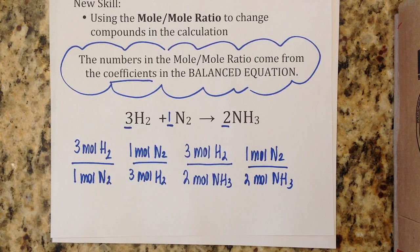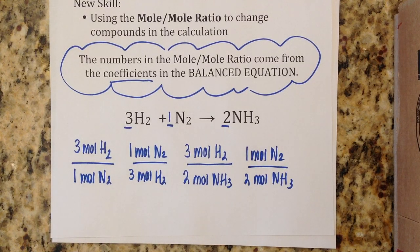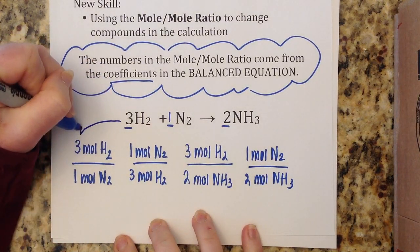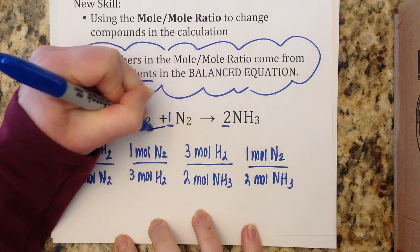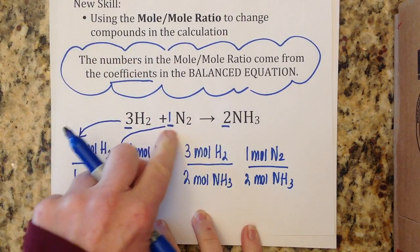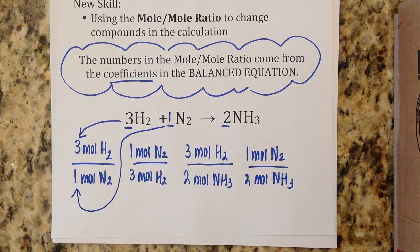Maybe I want to compare nitrogen and ammonia: one mole of nitrogen gas to every two moles of ammonia. A mole-to-mole ratio is simply taking any two formulas in your reaction — they may be on the same side or different sides — and writing the ratio of how many moles of one thing to how many moles of another. The numbers in the ratio come from the numbers in your balanced equation, which is why it's so important that we start with a balanced equation every single time.